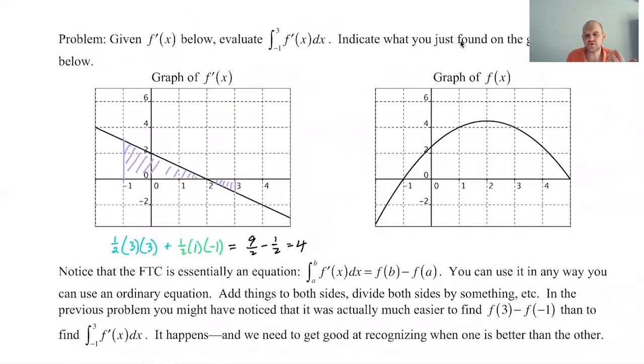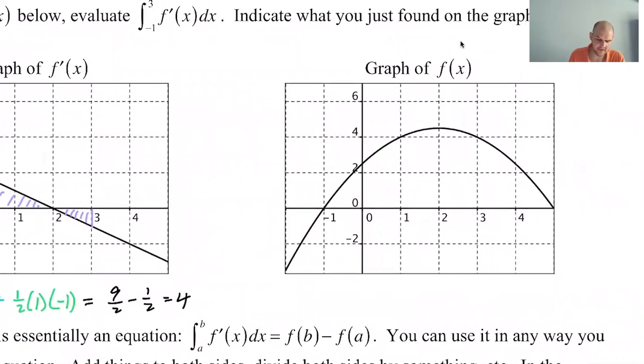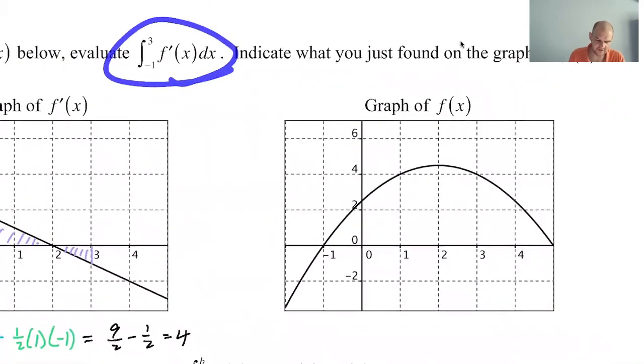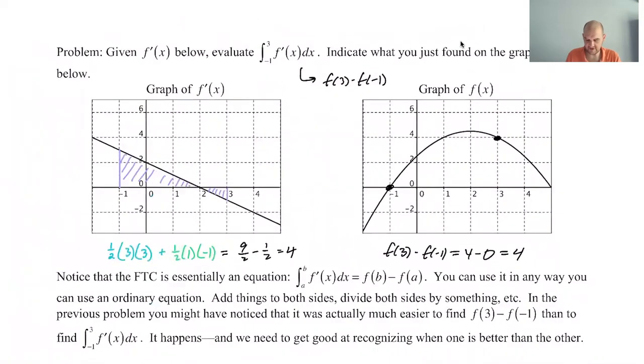All right, not the end of the world, but what if we instead had the graph of f(x), which we do, and we want to evaluate the integral of f' from -1 to 3? Well, we know by the fundamental theorem that that's just going to be f(3) minus f(-1). f(3) is 4, and f(-1) is 0, so f(3) minus f(-1) is 4 minus 0 is 4. So I would say it's inarguably easier to use the graph of f(x) to figure that out.